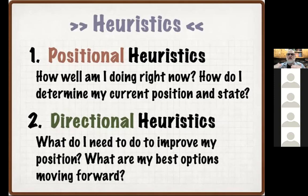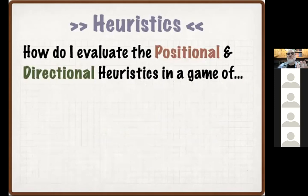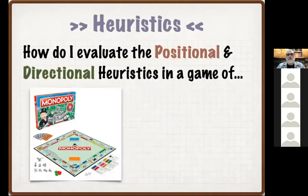Different games ask us to evaluate different things. In a game like Monopoly, three or four rounds into the game, part of the positional heuristics is: how much money do I have? What properties do I have? Which space on the board is my piece? Have I landed on Community Chest or Chance and have a card? Would this be my third dice roll, which carries the risk of going to jail? There are different pieces of information to look at in order to make choices going forward. But all of this is relative to other players.